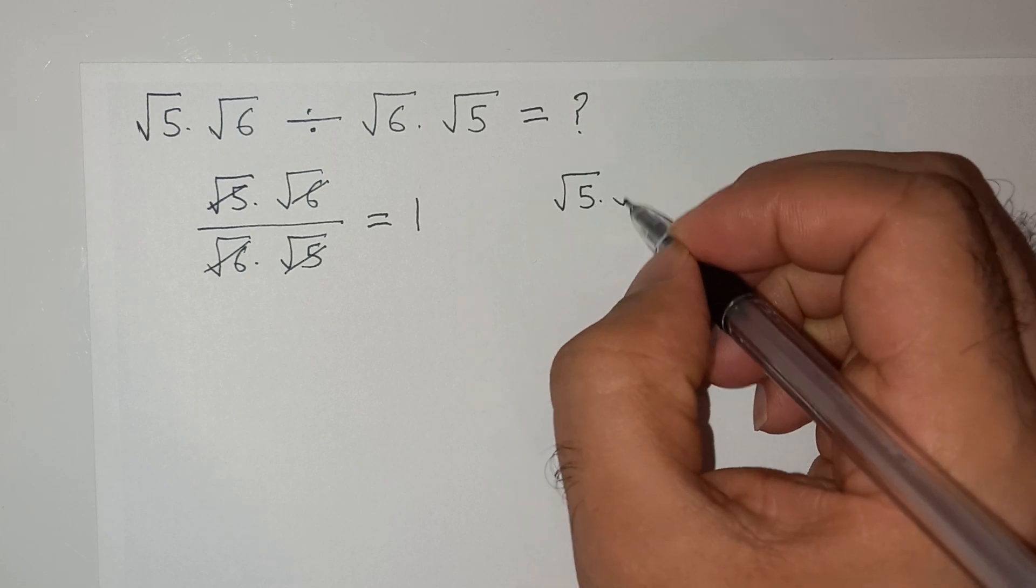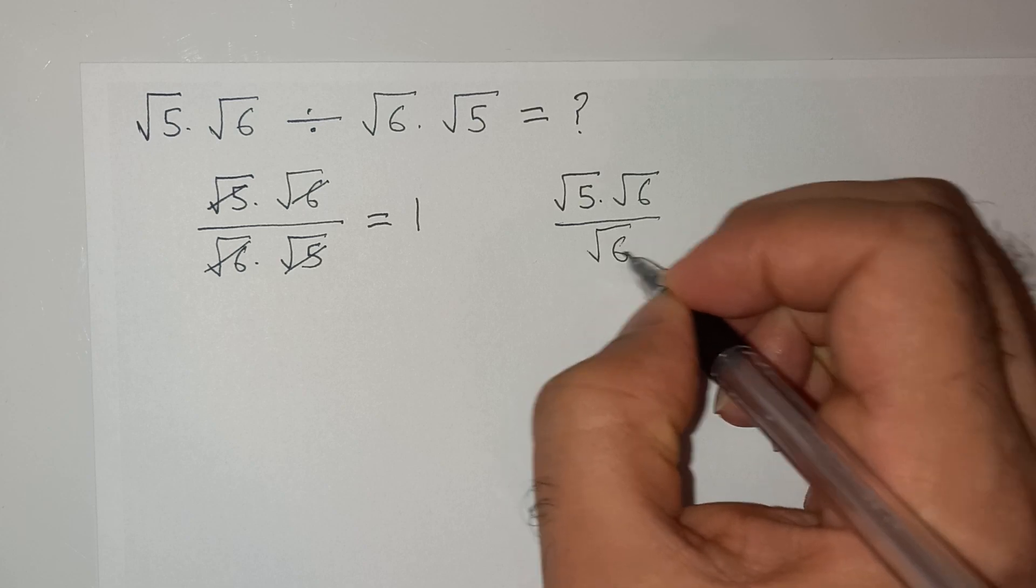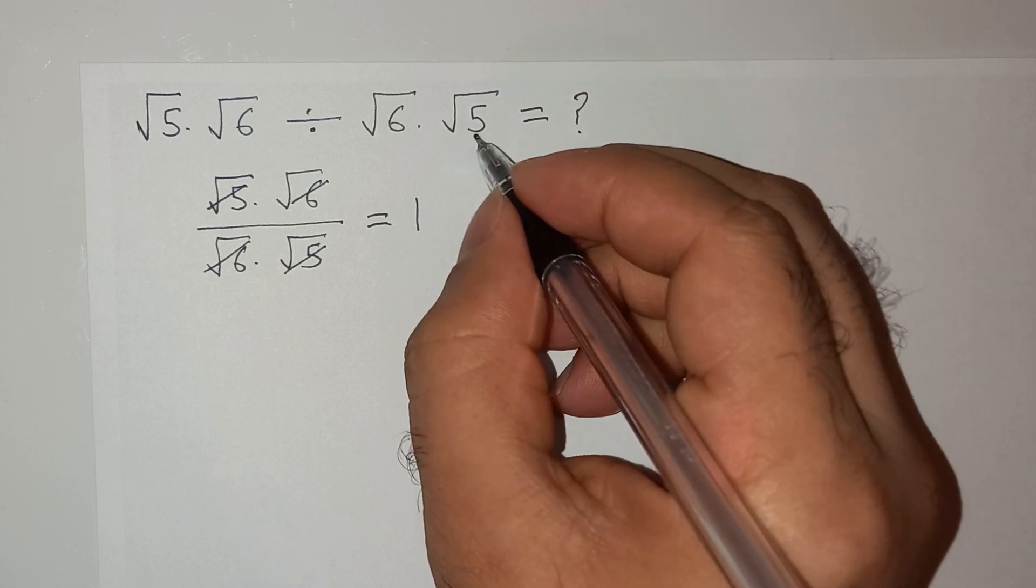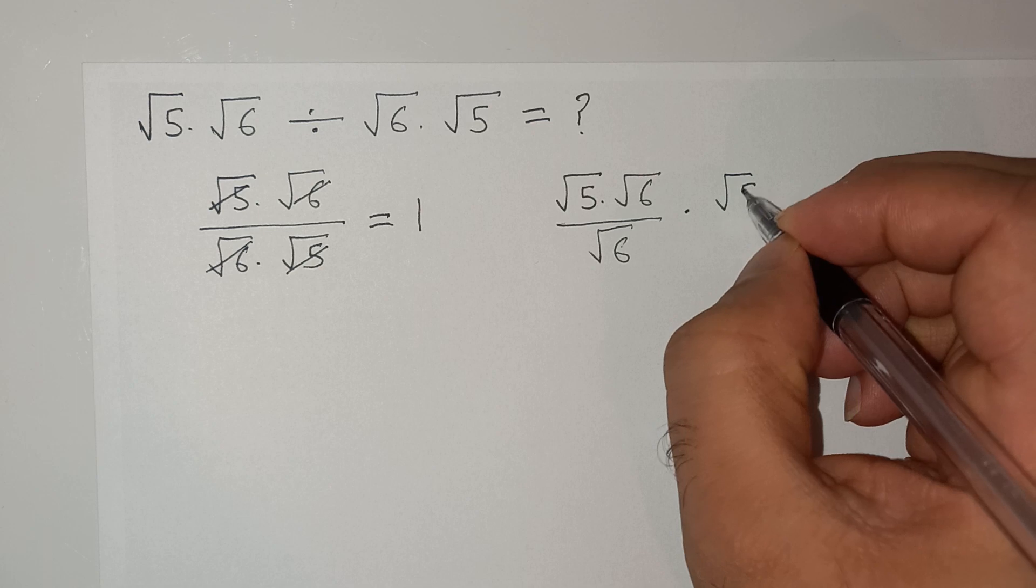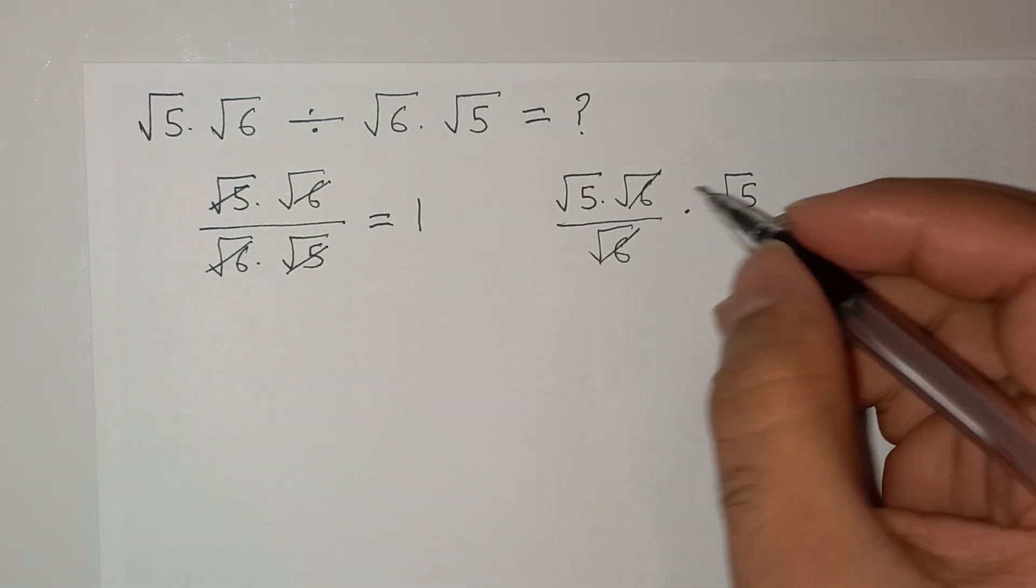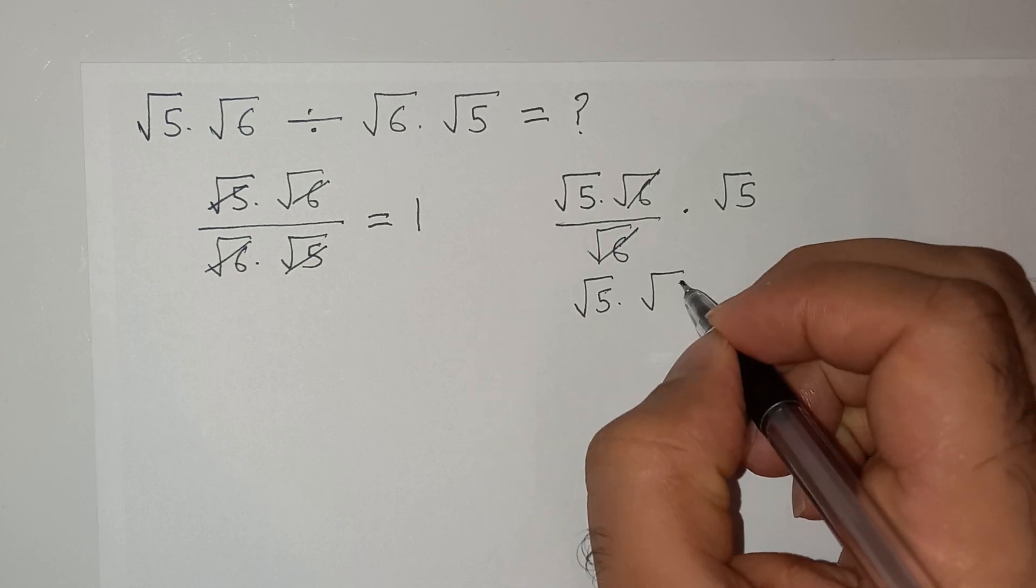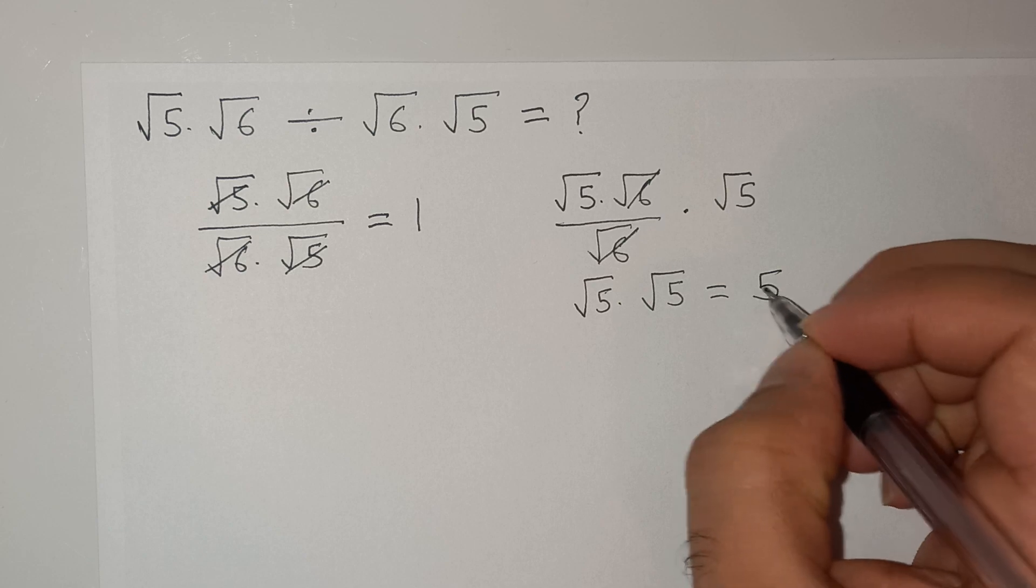√5 multiplied √6 divided by √6, and then multiplied this √5. This √6 and √6 will cancel, and we have √5 multiplied √5, and the answer is 5.